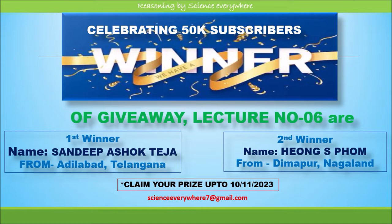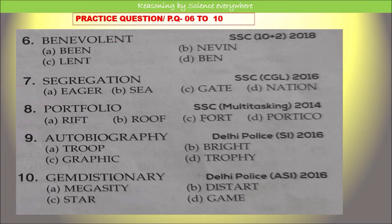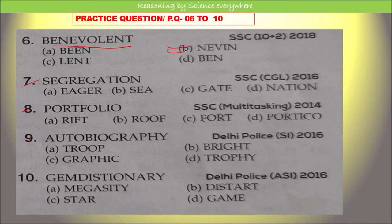Let us see what were the questions given in lecture 6 — they were very simple. These are the five questions, numbers six to ten. What you had to do is find the word that cannot be formed using the given word. You can see option B cannot be formed because we don't have the letter 'I' in the given word, so option B is the correct answer.